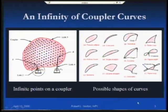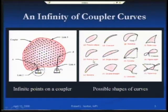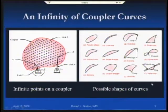These curves come in a variety of shapes. I've taken to giving them highly technical names such as kidney bean, banana, crescent, teardrop, and so on. These are just representative of the kinds of shapes you can get from these coupler curves.